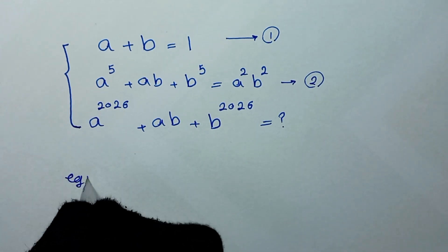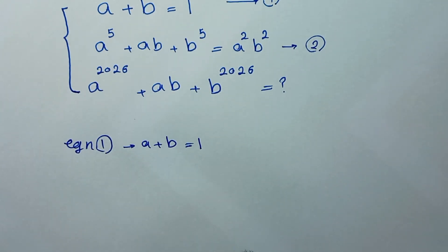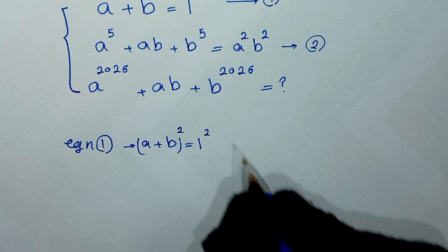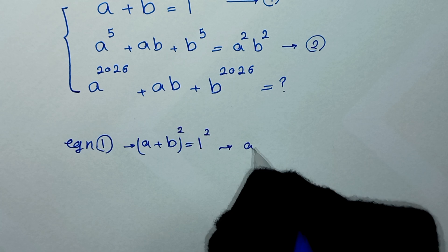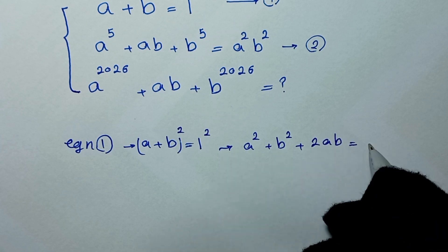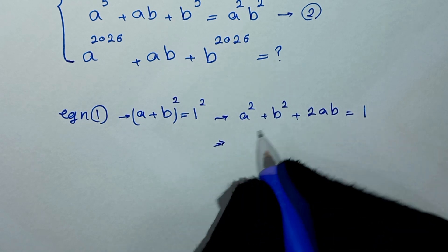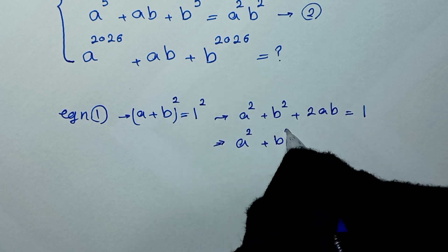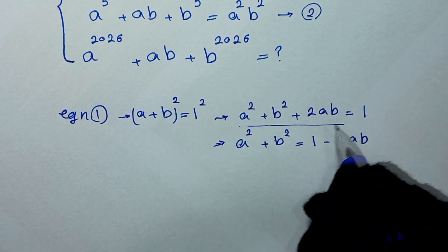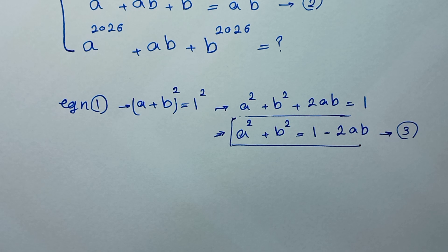From equation 1 we have a plus b is equal to 1. In the next step we square both sides of this equation, so it becomes a squared plus b squared plus 2ab is equal to 1. Then we move 2ab to the other side, so a squared plus b squared is equal to 1 minus 2ab. Let this be equation 3.